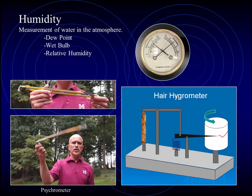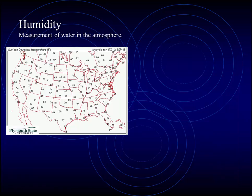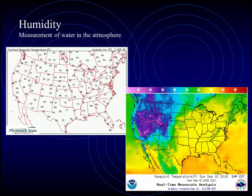Humidity, the measurement of how much water is in the atmosphere, may be measured with hygrometers or psychrometers. We can take the numeric data, put it on a map of the country, or represent it graphically with colors, as we see here.